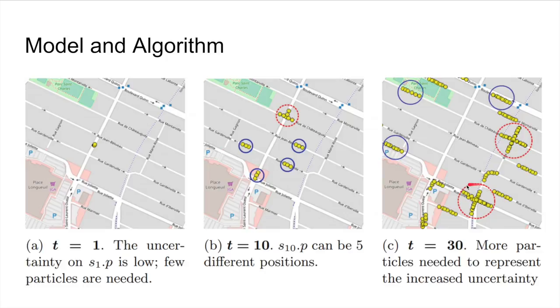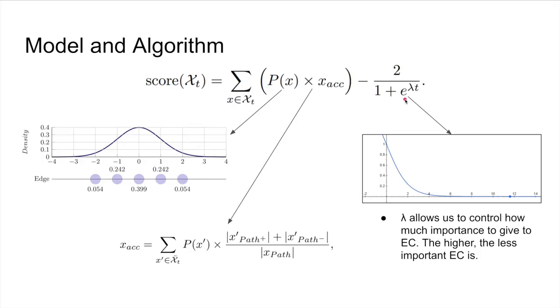The second part is the energy consumption that the GPS reading would have if it is made at time t, which is a sigmoid function that's been flipped on the y-axis. We have the lambda parameter that allows us to control how much importance is given to the energy consumption.